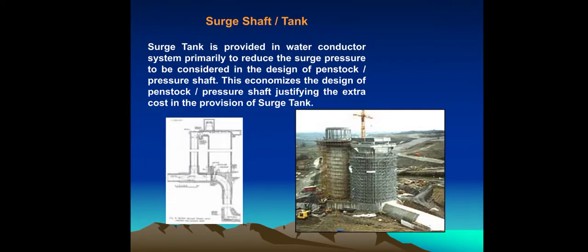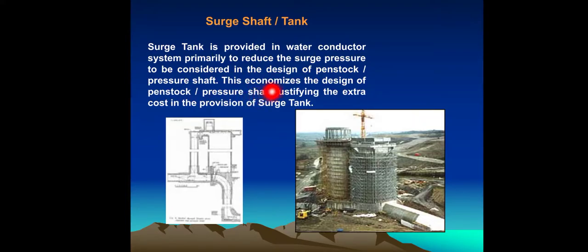Surge Shaft: A surge tank is provided in the water conductor system primarily to reduce the surge pressure to be considered in the design of the penstock pressure shaft. This economizes the design of penstock pressure shafts and justifies the extra cost in the provision of a surge tank.